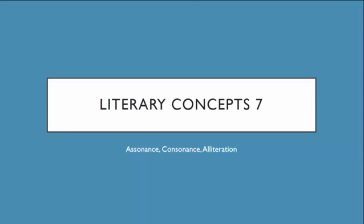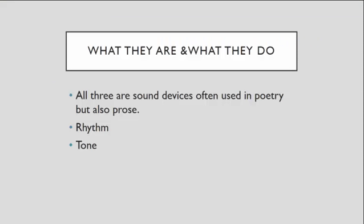Today's Literary Concepts Lesson 7 is looking at three sound devices: assonance, consonance, and alliteration. All three of them are sound devices that you will usually see in poetry, but you'll also see them used in novels and other stories as well. Poetry uses them maybe a little more heavy-handed, but you still encounter them in novels.